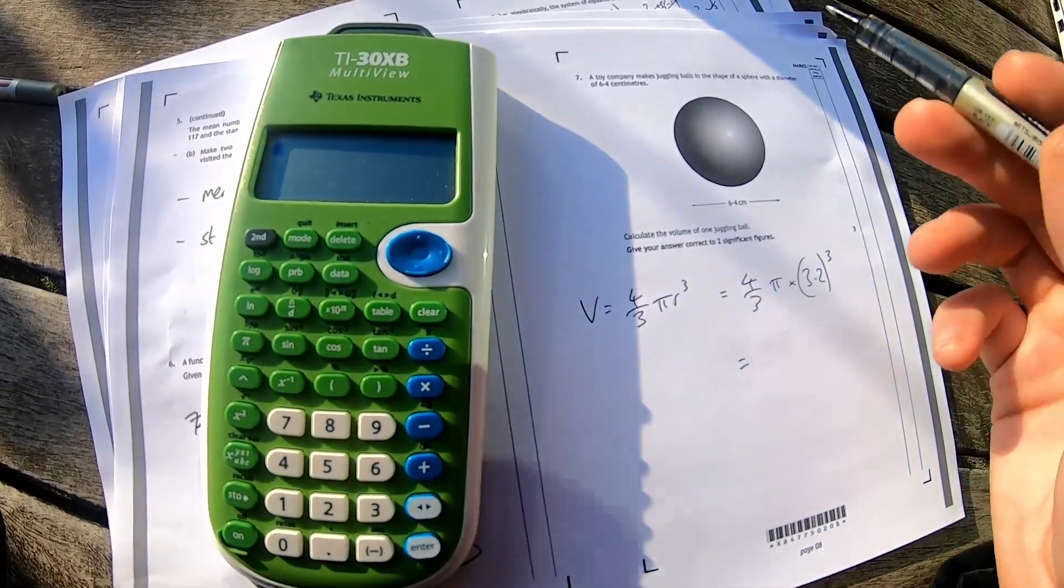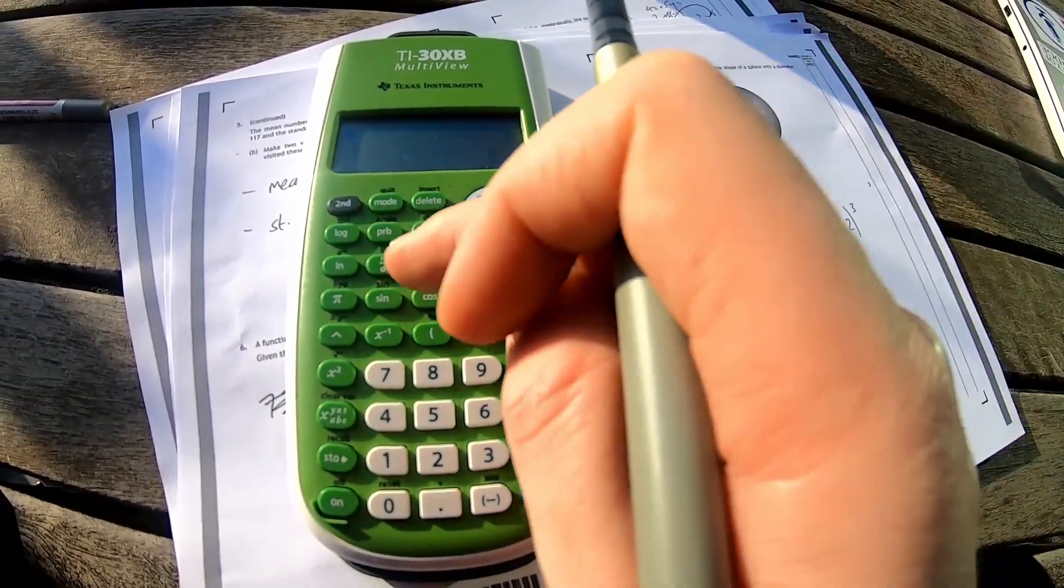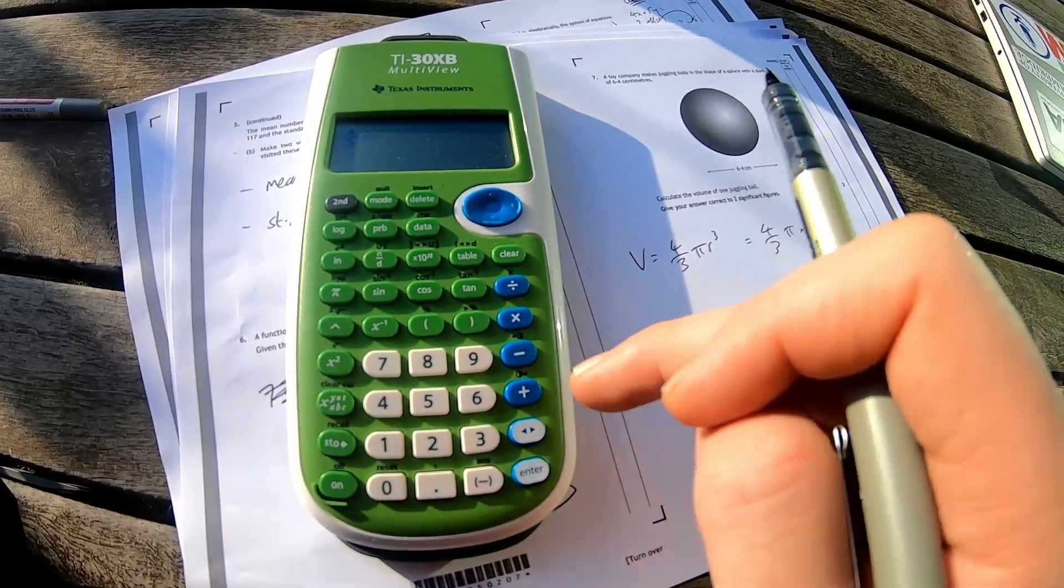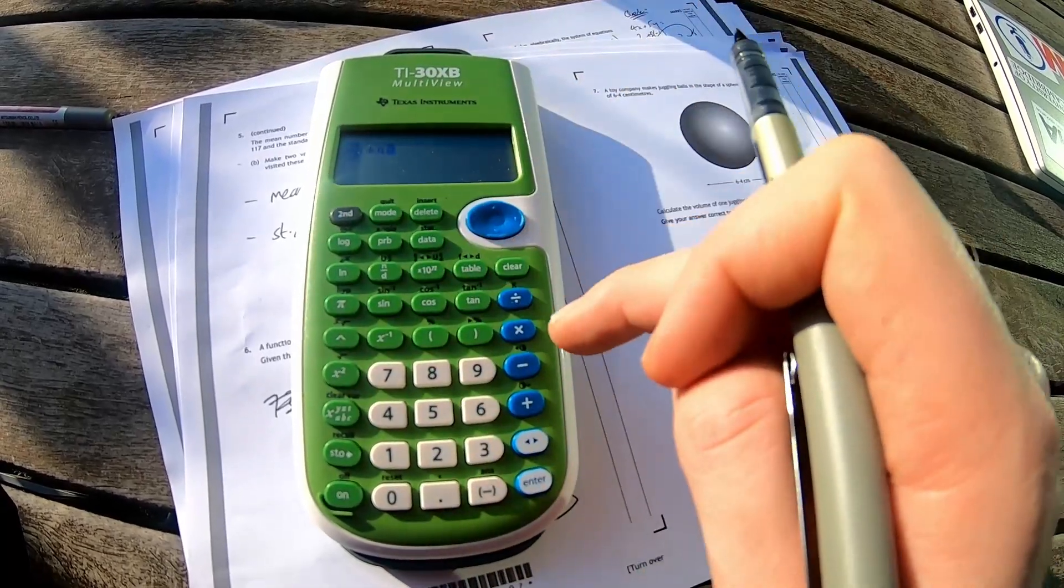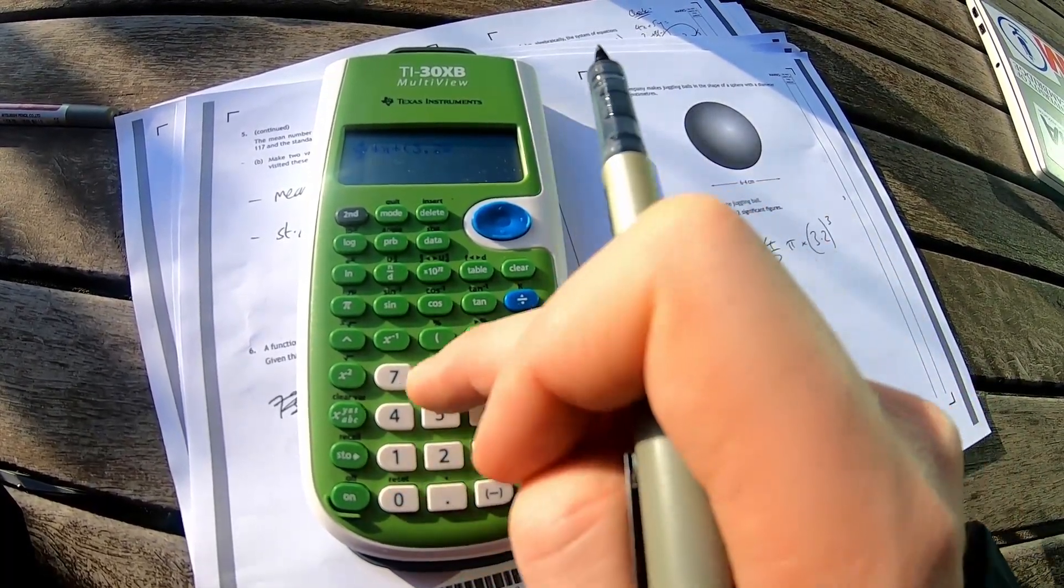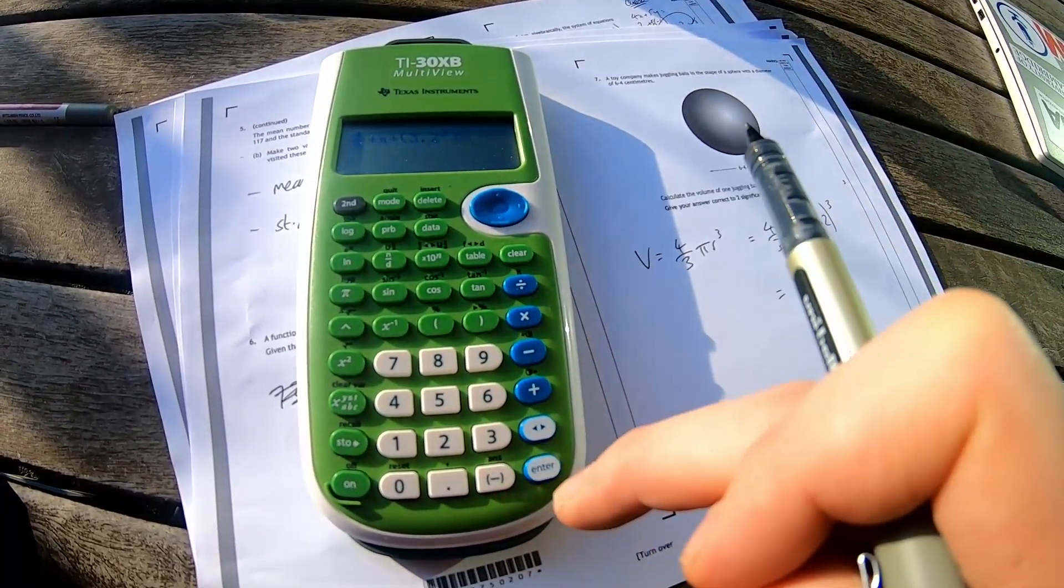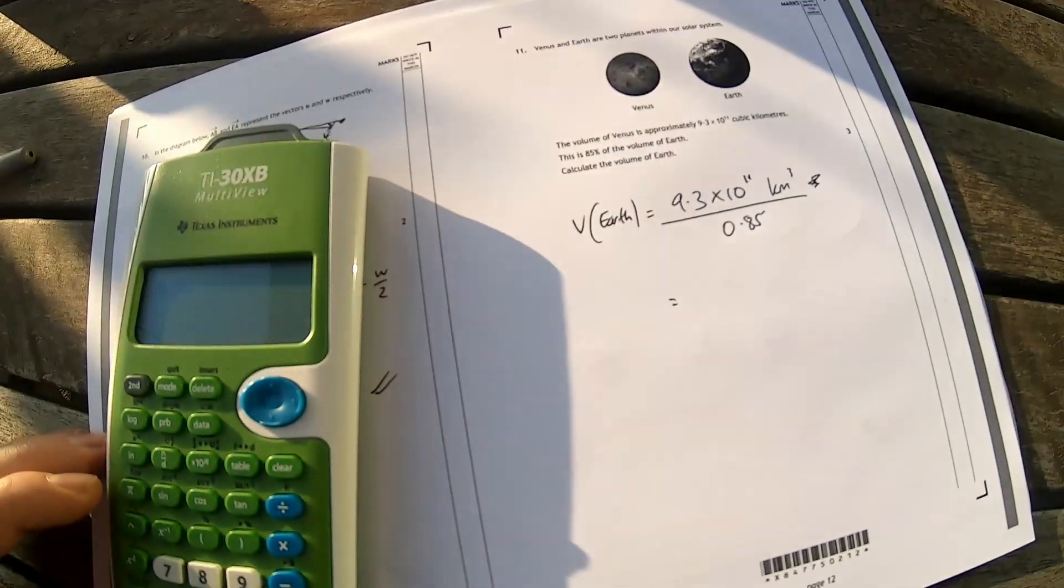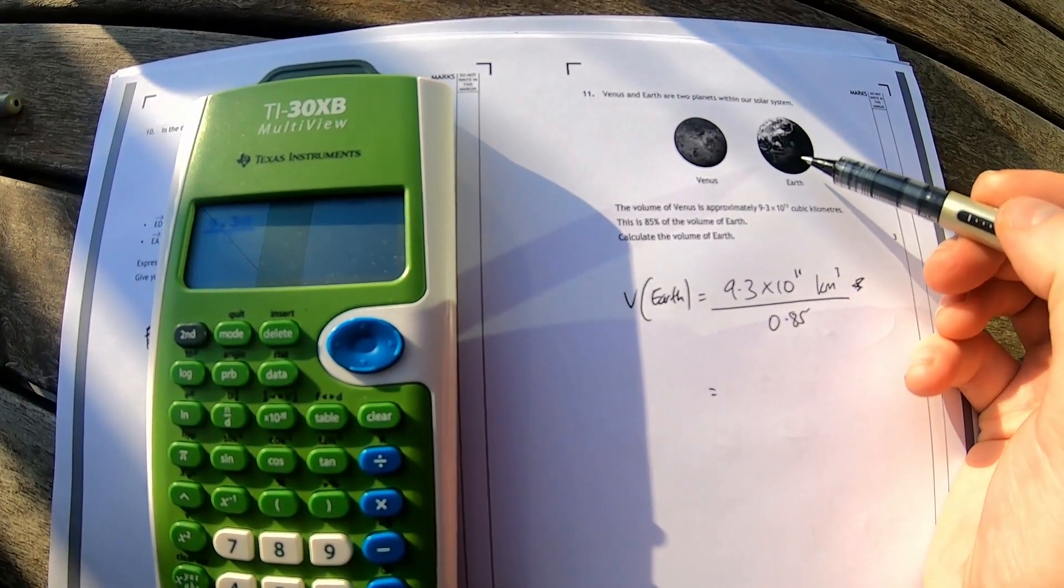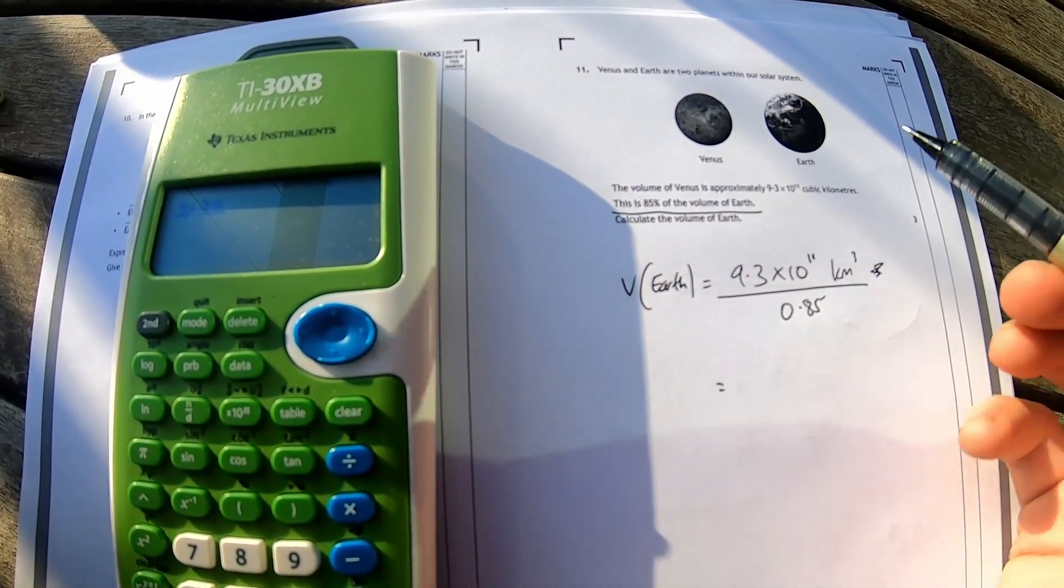I'm quite pleased here to have found a significant figures question. They just want the volume of this sphere which has a diameter of 6.4, and they've given me the formula to find out the volume of a sphere. This is incredibly generous of them. 4 divided by 3 times pi times bracket 3.2 power of 3 bracket. There you go. This one is calculate the volume of the earth given the volume of venus. It simply says this is 85 percent the volume of the earth.